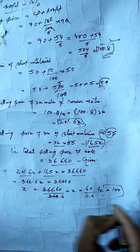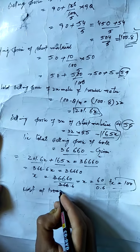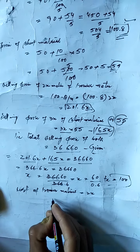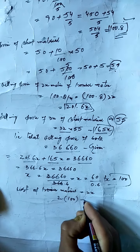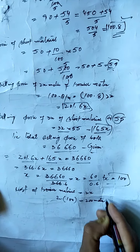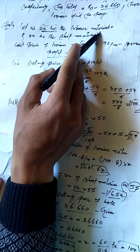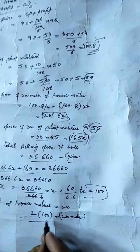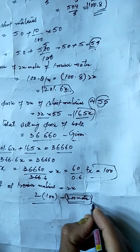So x equals 100. The trouser material is 2x, which equals 2 into 100, giving 200 meters. Therefore Hamid bought 200 meters of trouser material.